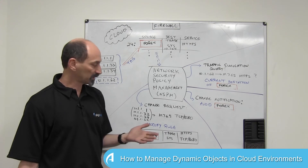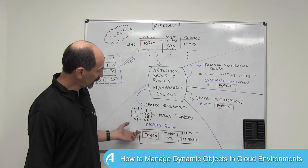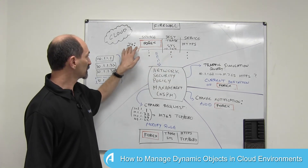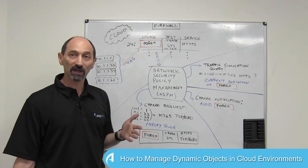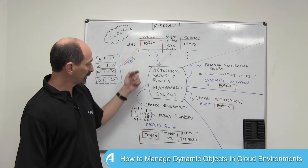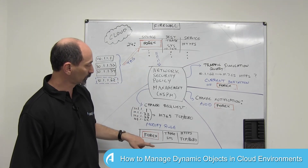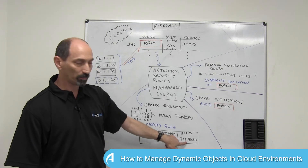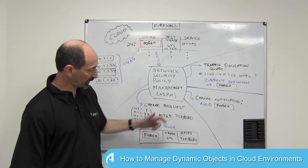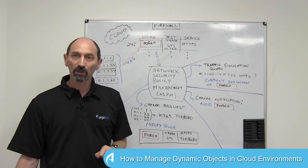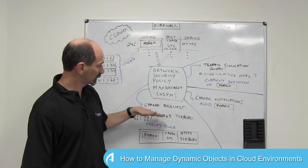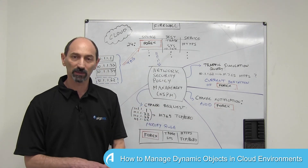Even better, an NSPM would realize there is already a rule in the firewall — rule 24 in this example — that almost does what is required. The only thing needed is to modify that existing rule and add the new port number to the existing service. After doing that, the combined rule will provide the functionality required before, in addition to satisfying the new change request currently being handled.